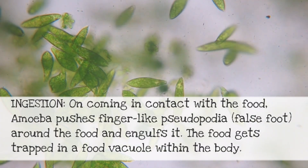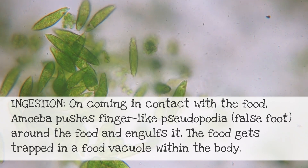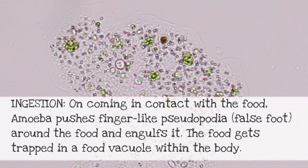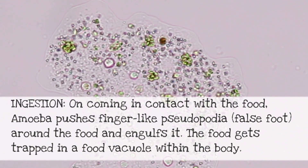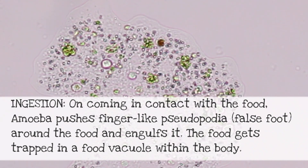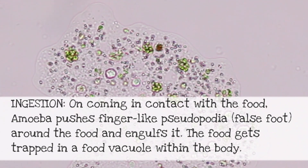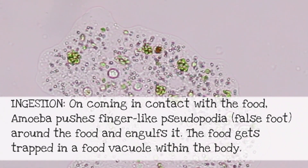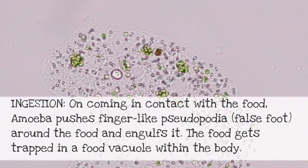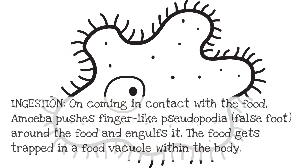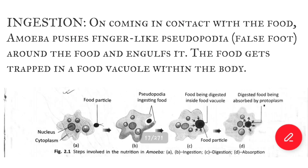During ingestion, on coming in contact with food, amoeba pushes out finger-like projections called pseudopodia — meaning false feet. These surround the food and engulf it. You can see in the diagram: the finger-like projections from the body are called pseudopodia.